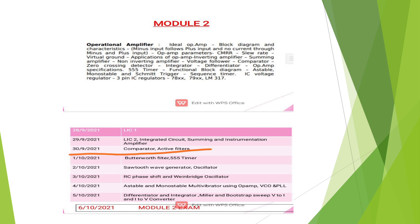We have a class on Op-Amp: Block Diagram, Characteristics, Parameters, CMRR, Slew Rate, Virtual Ground, Applications of Op-Amp — Inverting Amplifier, Summing Amplifier, Non-Inverting Amplifier, Voltage Follower, Comparators, and Filters.